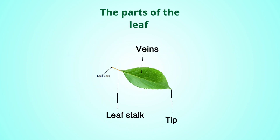What are the parts of the leaf? The first part is the leaf base, and then the leaf stalk that carries the leaf. Next are the veins, because water and nutrients move inside them. And the tip is the end of the leaf. These are the parts of the leaf.